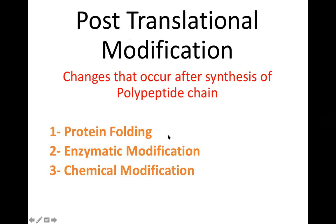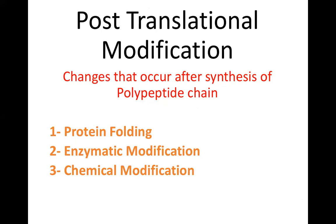The first modification is protein folding. The polypeptide chain undergoes primary, secondary, tertiary, and quaternary folding. Quaternary folding depends on whether the protein is a single polypeptide or more than one polypeptide. If the protein is a single polypeptide, then the folding is maximum at the tertiary level. If the protein is more than one polypeptide, then each chain independently requires a tertiary structure.